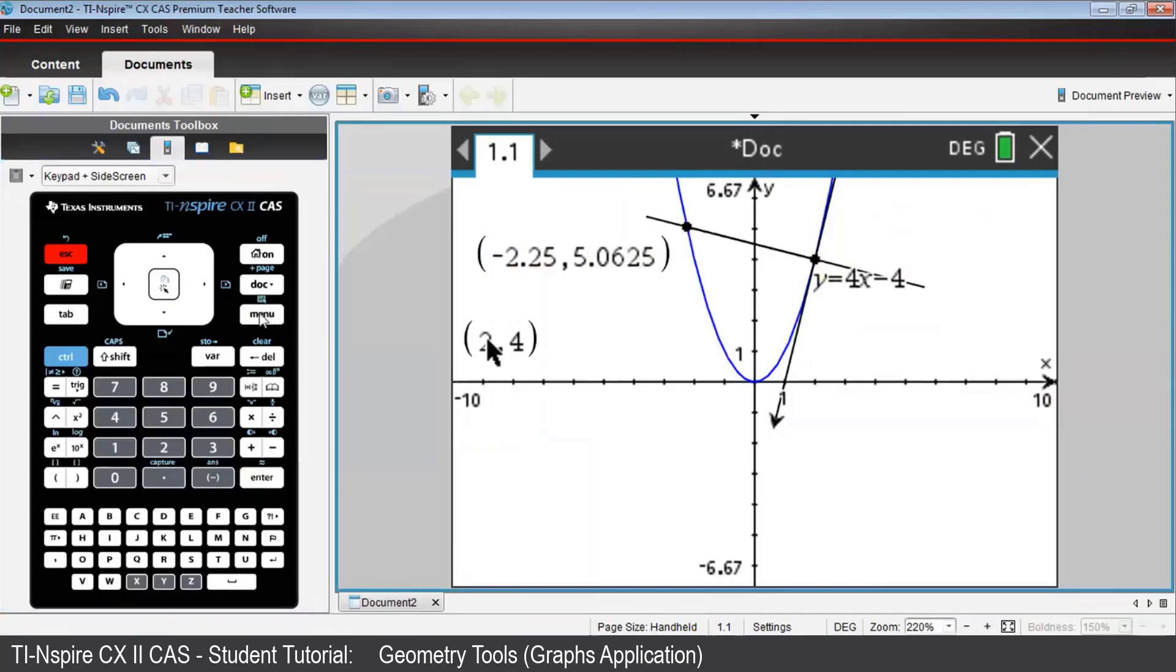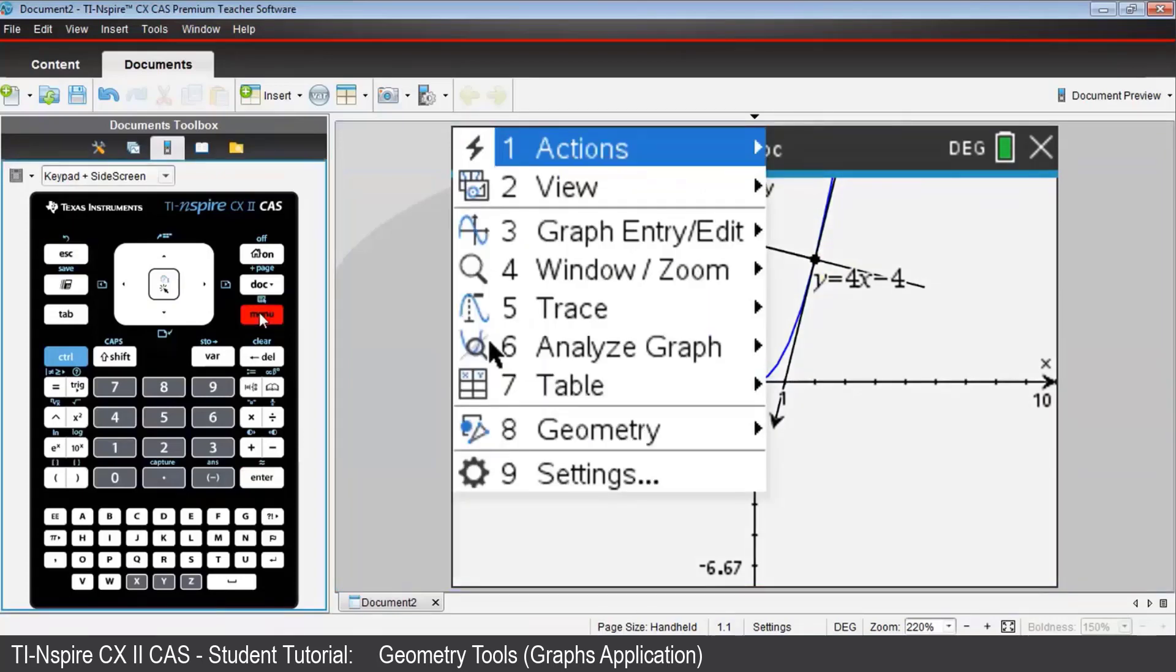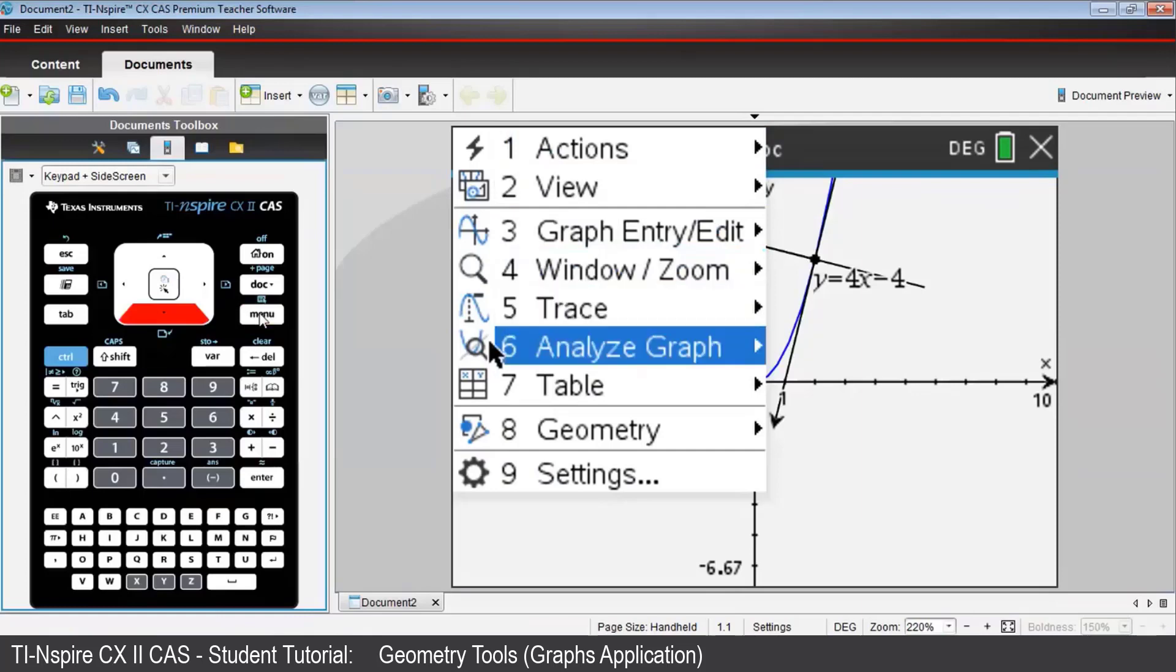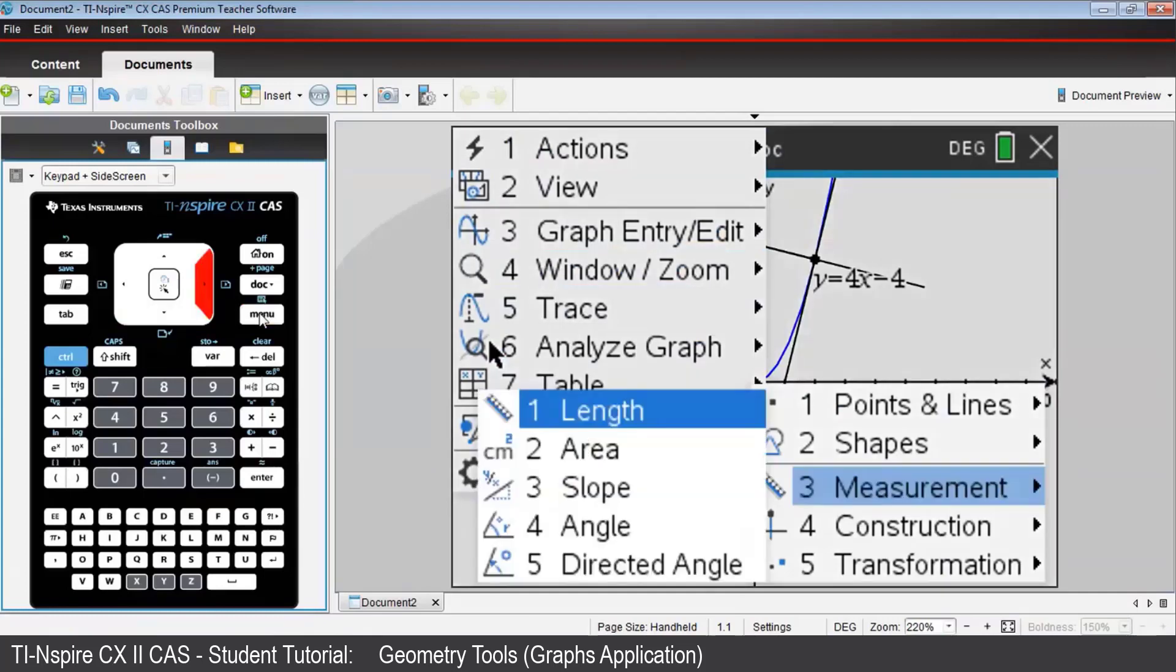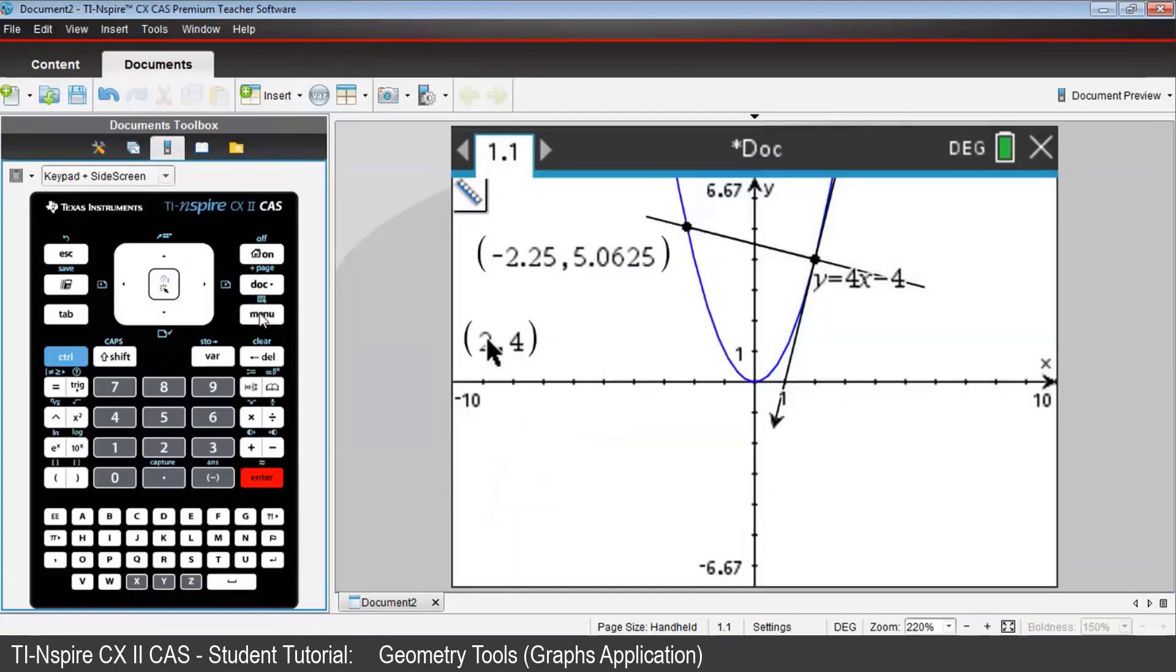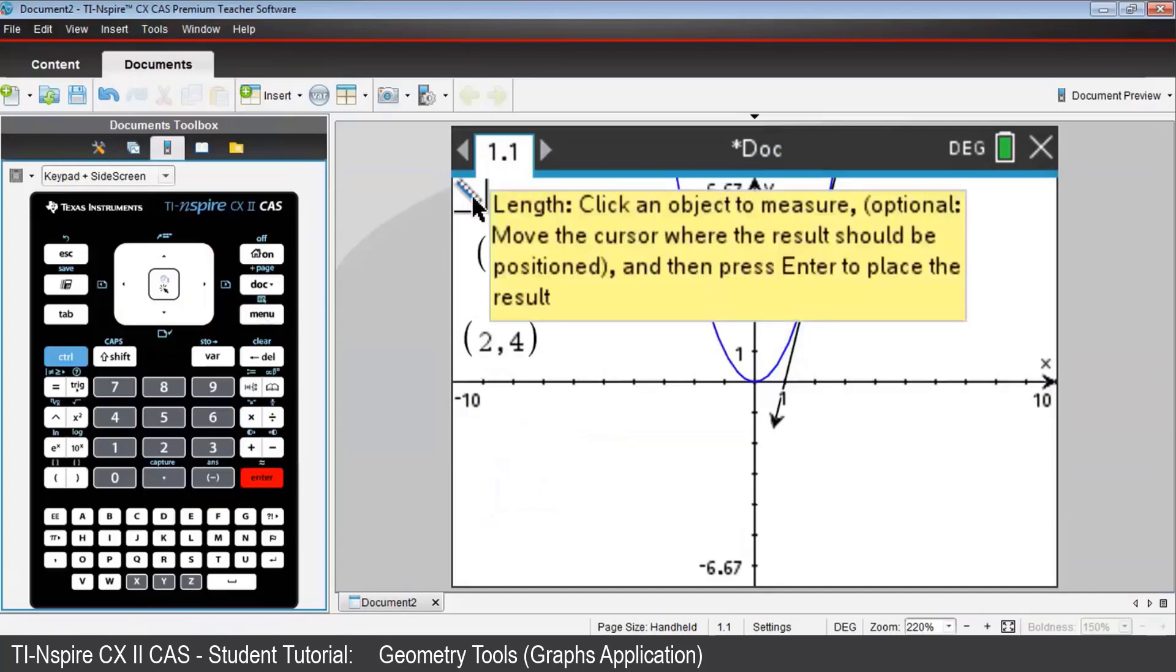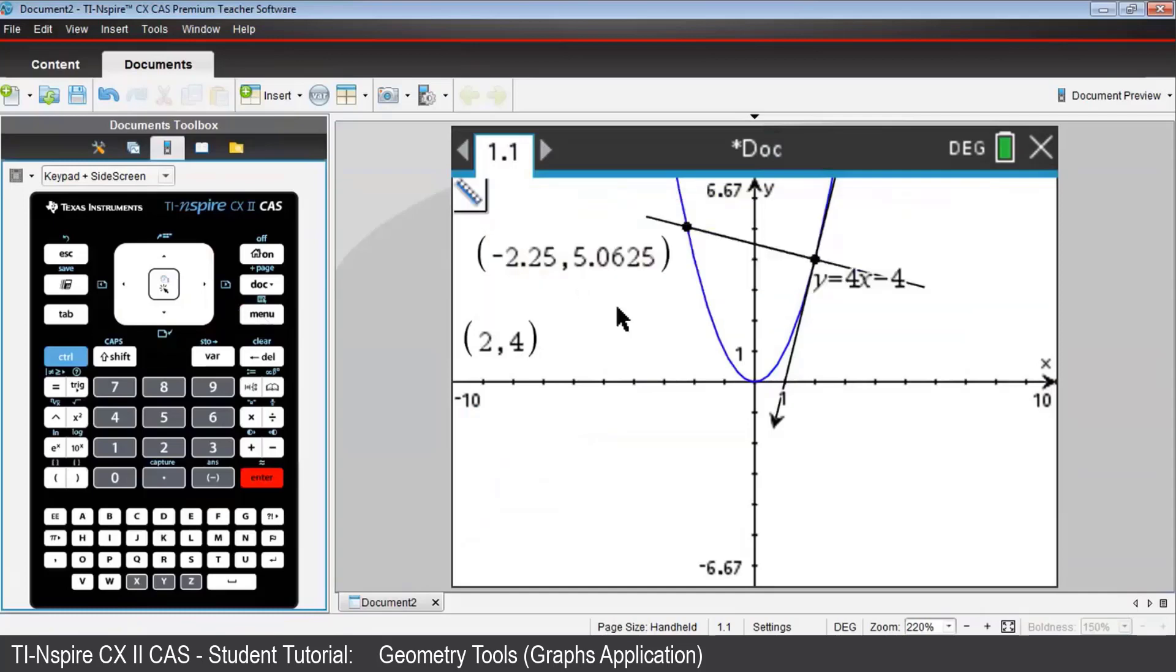Now, return via the menu to Geometry, then Measurement, then Length. The icon requests you to select the object you wish to measure. If it first says Line, press Tab to toggle to Segment.